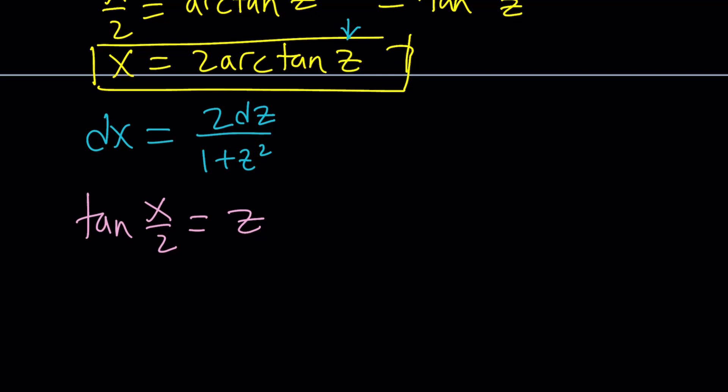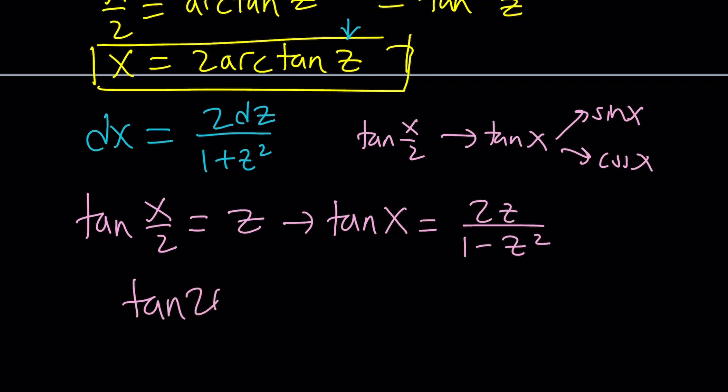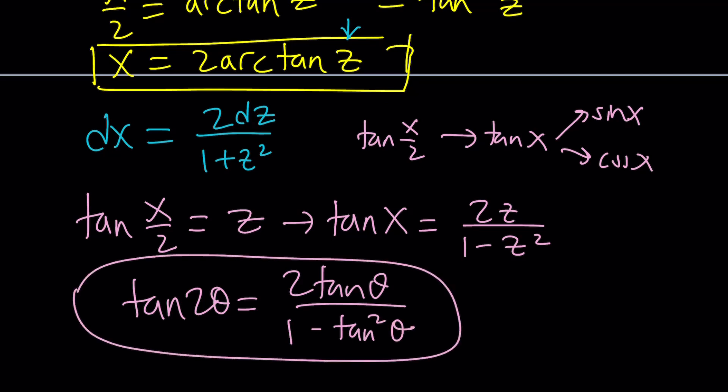Okay, so, from here we can basically use the double angle to go to tangent. So, the idea is the following. From tangent x over 2, we're going to go to tangent x. And then from that, we're going to go to sine and cosine. Make sense? So, that's the plan. You should always have a plan. And tangent x is basically the double angle for x over 2. So, it's just going to be 2z over 1 minus z squared. In this case, I use the formula for tangent of 2 theta, which is 2 tangent theta divided by 1 minus tangent squared theta. Make sense? This is the double angle formula.